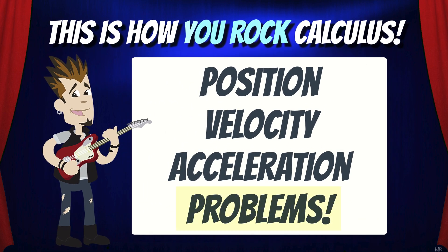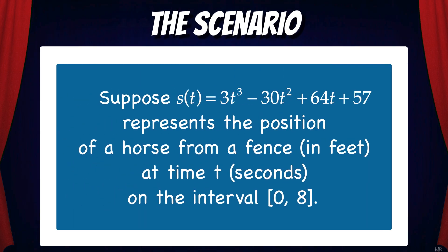Hey everybody. In this video we're going to be looking at position, velocity, and acceleration problems. Here's the scenario: suppose the function s shown here represents the position of a horse from a fence at time t on the interval 0 to 8. We're going to do a series of problems that relate to this scenario. I encourage you to pause the video at any time to try these problems on your own.